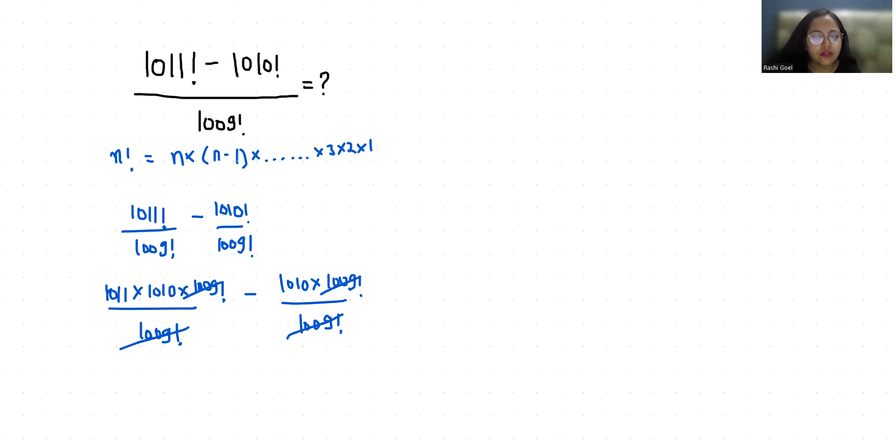So what is left? 1011 × 1010 - 1010. Now I can take 1010 as common: 1010 × (1011 - 1) = 1010 × 1010, or I can write this as 1010². So this equals (1000 + 10)².